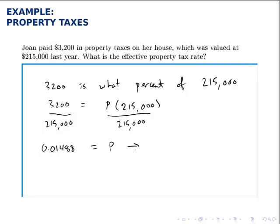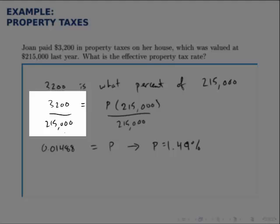As a percentage then P is about 1.49%. Now you might get to the point where you can jump straight to saying that the percentage is 3200 divided by 215,000.